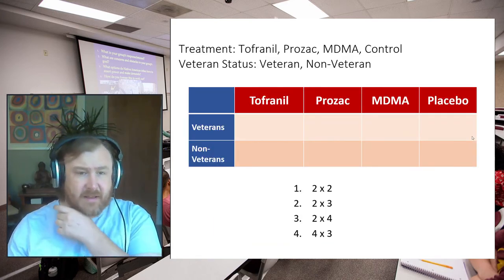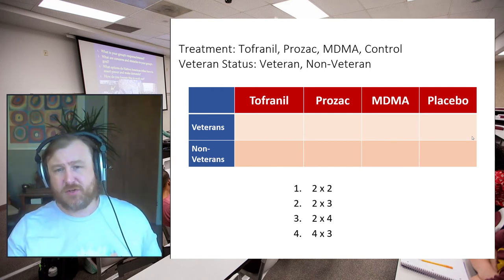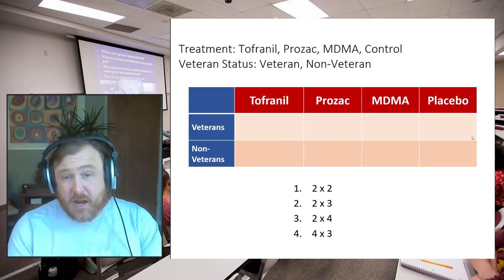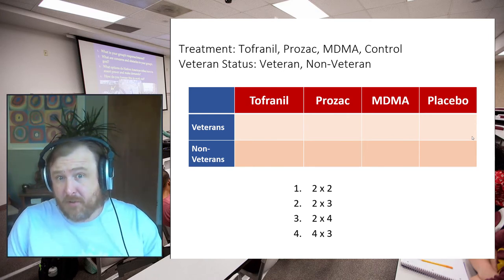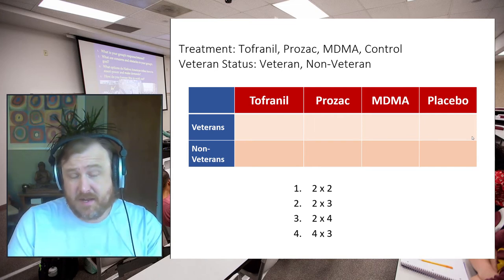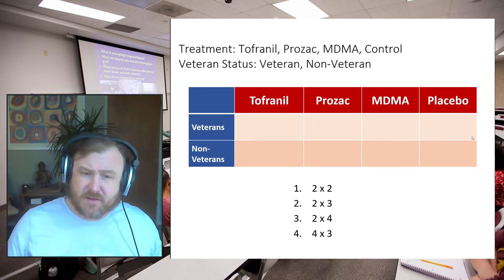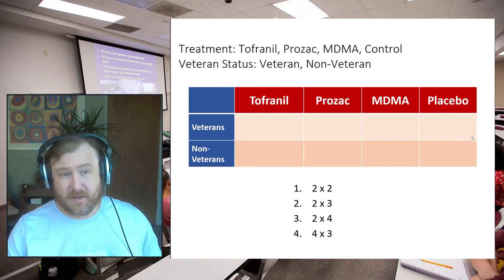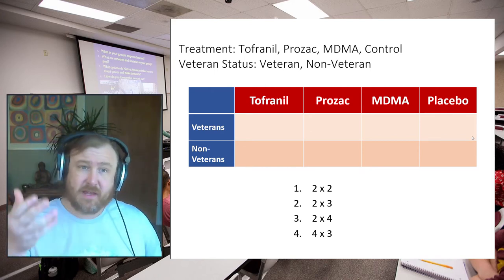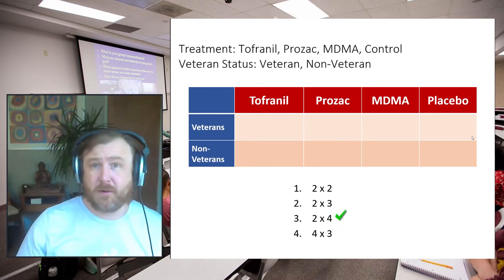Here's another example. What type of factorial design would you get from a setup where people are given tofranil, Prozac, MDMA, and placebo, and we're comparing veterans and non-veterans? Veterans versus non-veterans gives us a two, because there are two levels. Treatment type gives us a four. So this is a two-by-four factorial ANOVA.